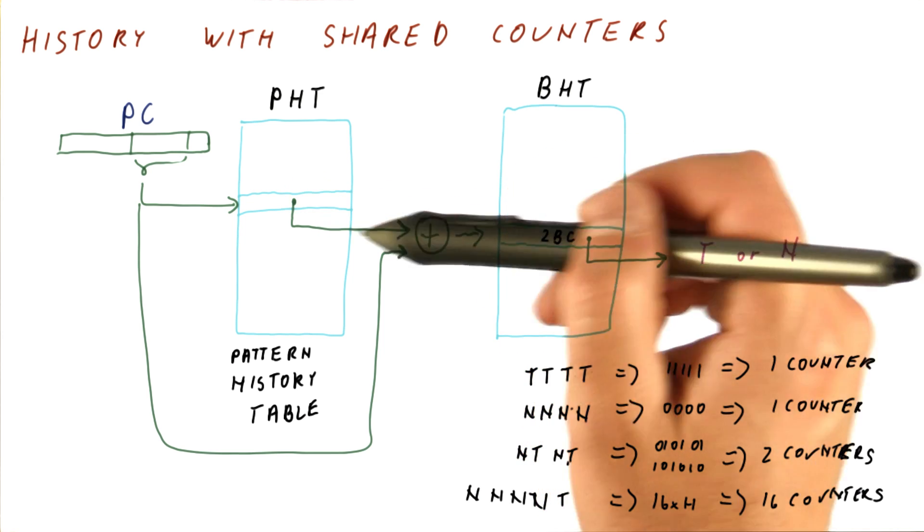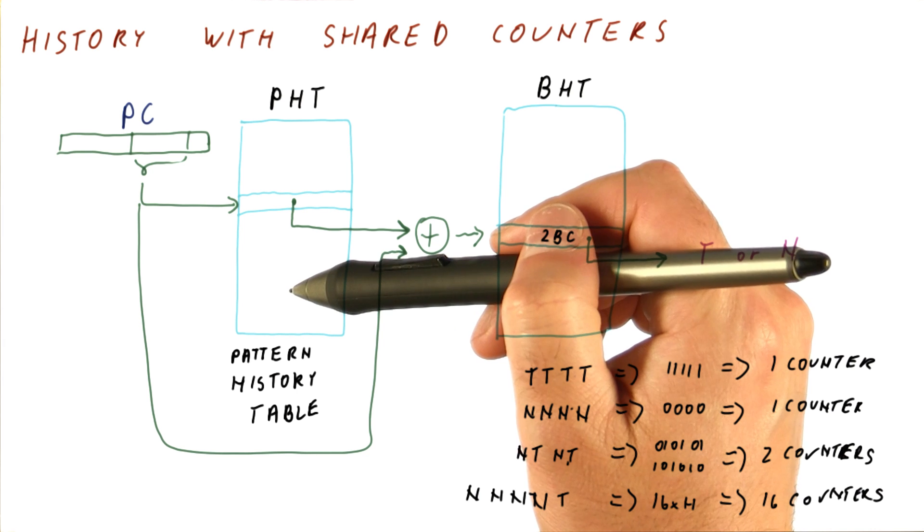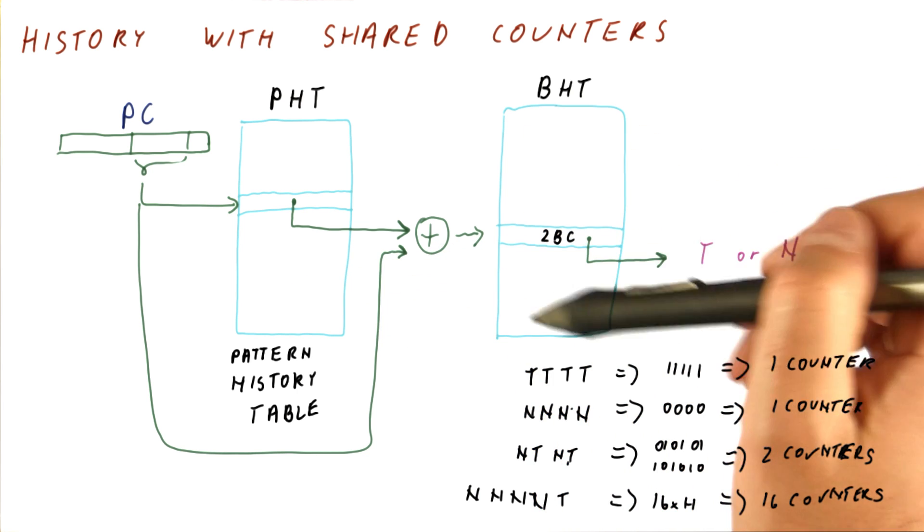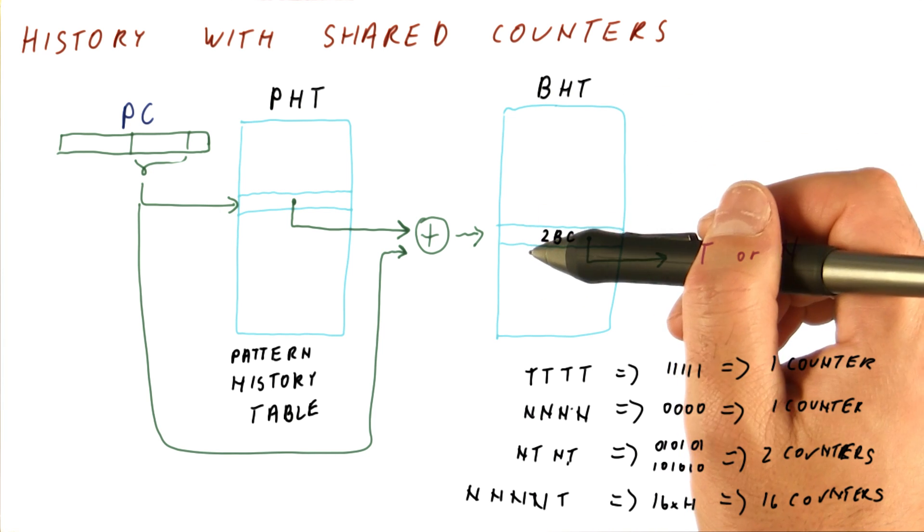But this happens very rarely if the BHT is large. And now it can be large because each entry is just two bits.